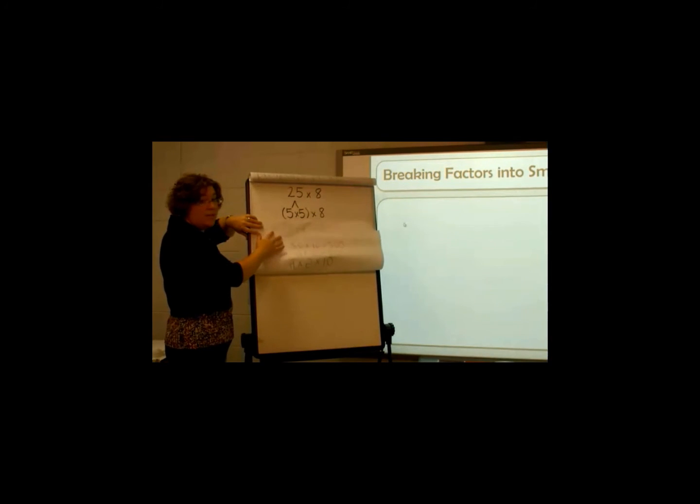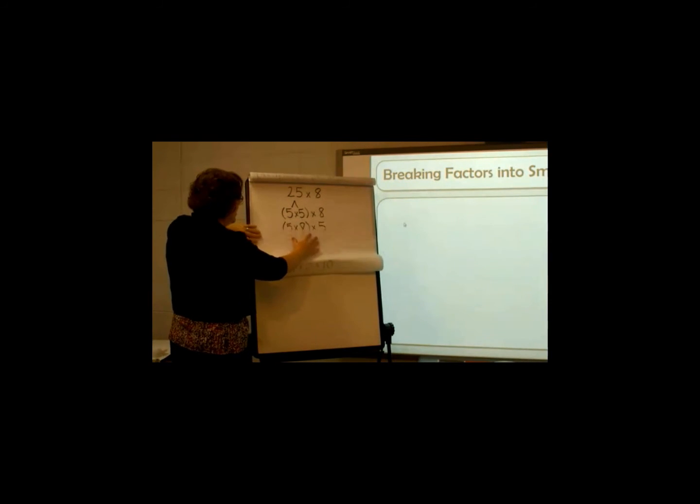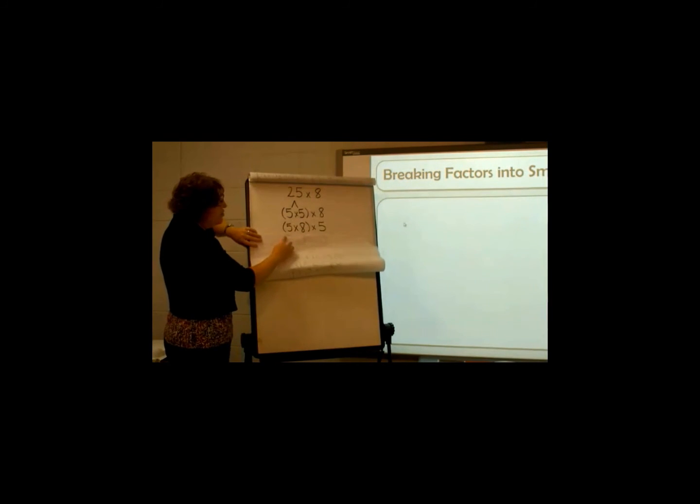Well then, using the associative property, once again, I can change the order of my multipliers to make it easier for me to multiply. So I'm going to turn my problem into 5 times 8 times 5.